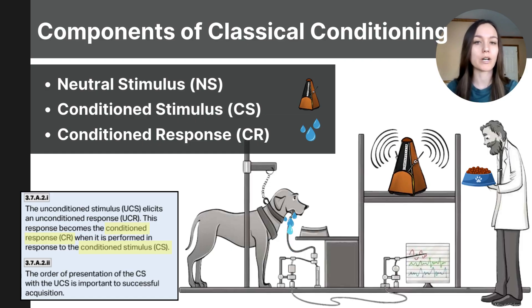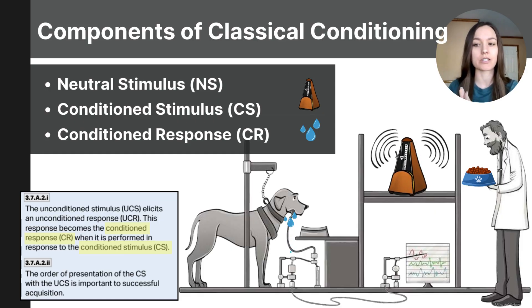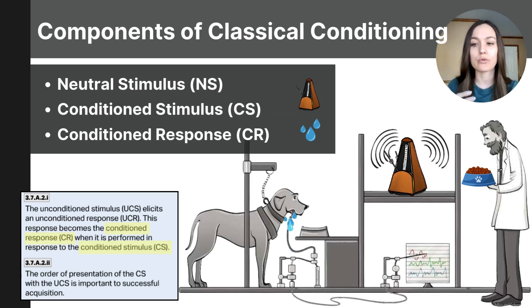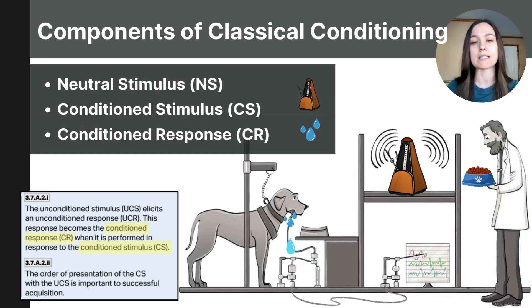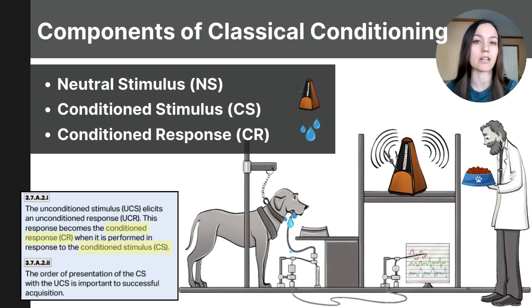The conditioned stimulus starts out as neutral and doesn't cause a specific response at first, but after being paired with an unconditioned stimulus, it triggers a new learned involuntary response. The conditioned response is the new and learned reaction to the conditioned stimulus. A helpful tip: break down the words. A stimulus is an object or thing; a response is a behavior. Unconditioned means unlearned — it just happens naturally. Conditioned means it was learned; it doesn't happen naturally but has now occurred through a learned association.